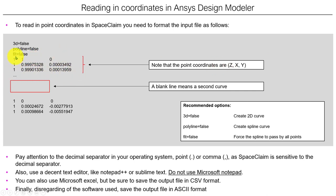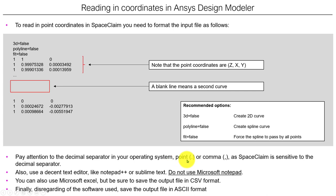In this case, see that I'm plotting this curve in the set plane. The set value can be fixed at one or zero, whatever you want. Here you give the X coordinate. And here I'm putting a blank line which means this corresponds to a second curve. The same applies here: please use Notepad++ or Sublime Text. Do not use Microsoft Notepad. Also check your decimal separator and always save those files as ASCII.